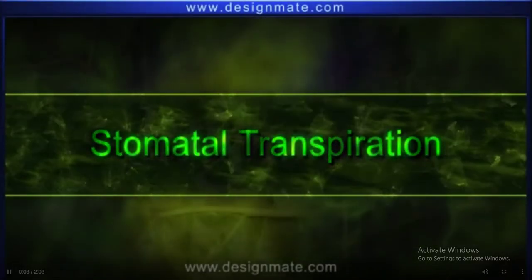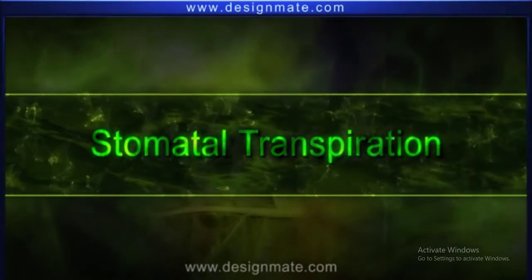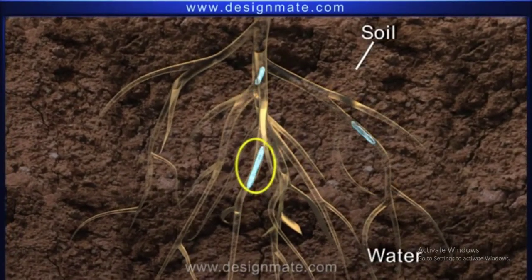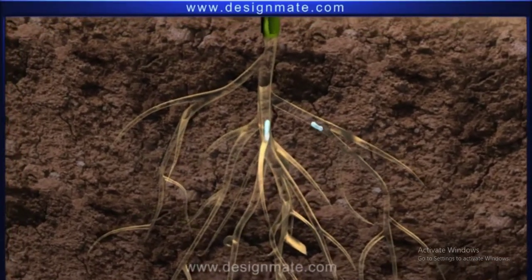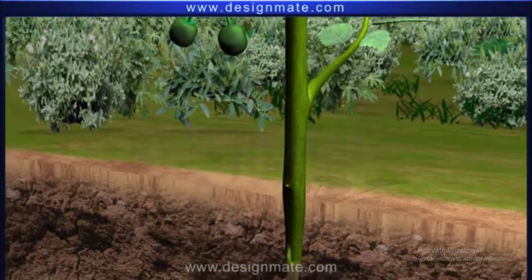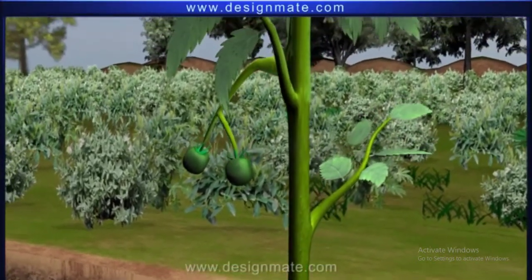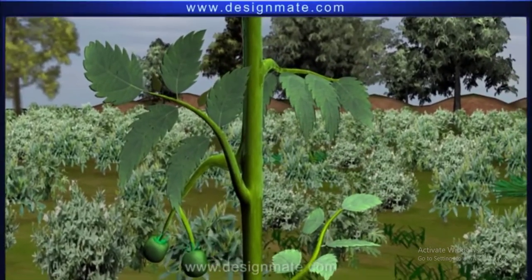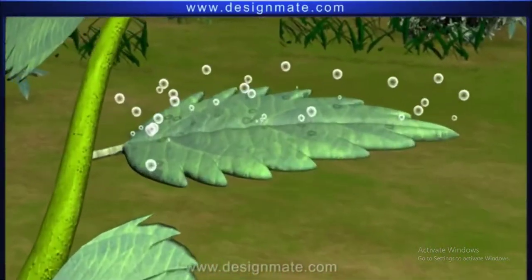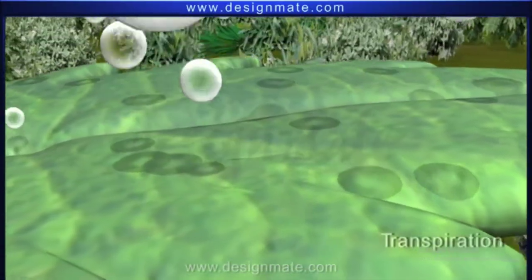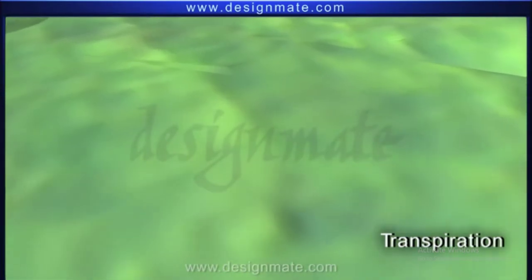Stomatal transpiration. Plants absorb large amounts of water from soil. A fraction of it is utilized while the rest is lost in the form of water vapor by the process of transpiration, mainly through stomata.